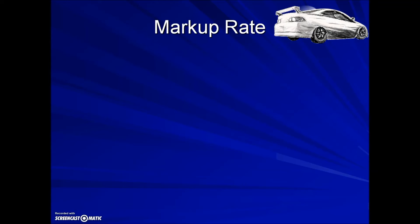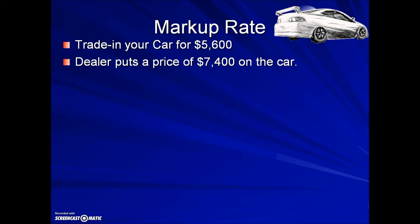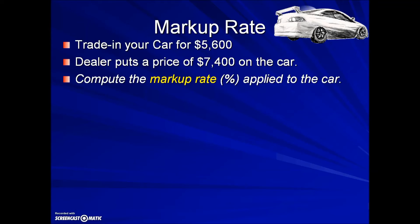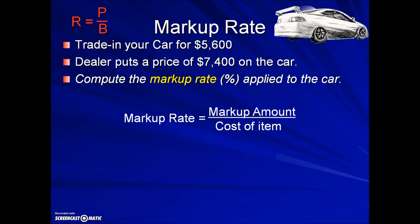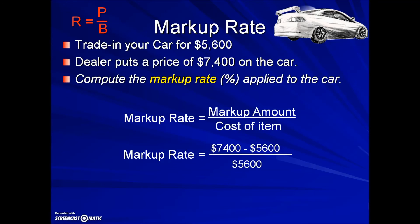Using that shortcut, we can calculate a markup rate problem. You have a trade-in of your car for $5,600 — that would be the cost to the car dealership. They put a selling price of $7,400 on the car, and this problem is asking us to compute the markup rate applied to the car. Using the relationship part over base, our base is going to be the cost of this item, and the part will be the markup amount. The trade-in amount the dealer paid was $5,600. To determine the markup amount, we take the selling price minus the cost. The difference between those two values gives us the markup amount: $1,800.